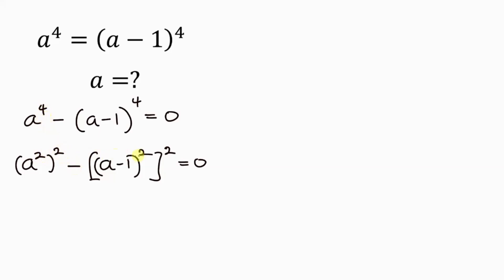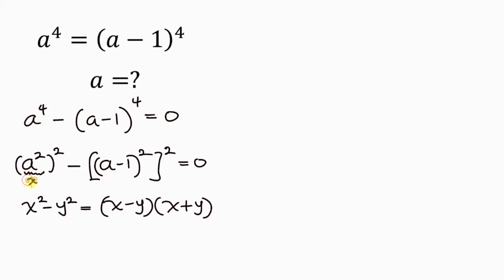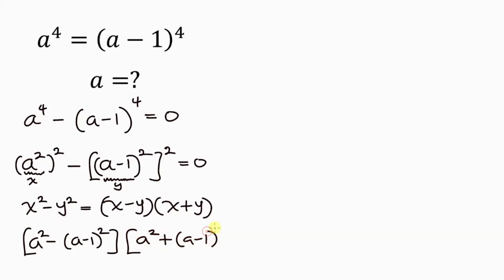Now we have an expression in difference of two squares, which has an identity — for example, x squared minus y squared can be expressed as x minus y times x plus y. That means a squared is our x and a minus 1 squared is our y. So this becomes a squared minus a minus 1 squared, times a squared plus a minus 1 squared, and this is equal to 0.